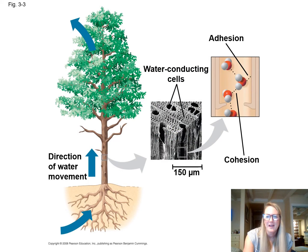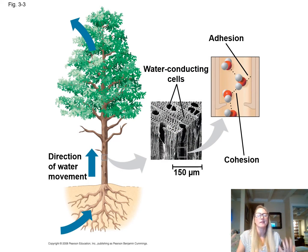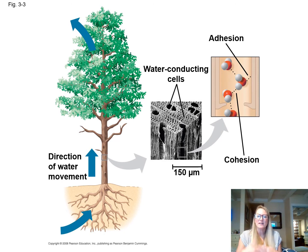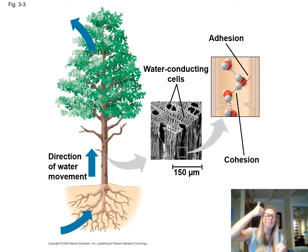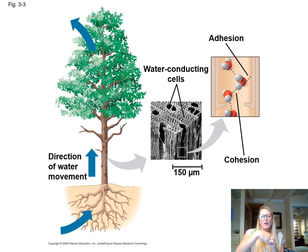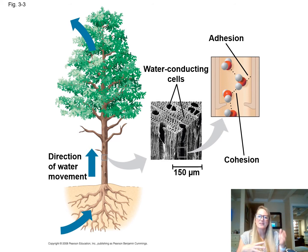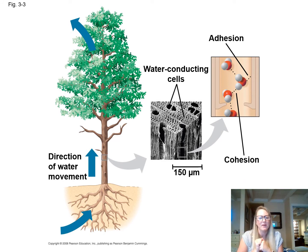Consider these giant trees — sequoias, 100 feet in length. How does water get all the way to the top? Cohesion in the xylem, which is the transporting vessel of plants, allows water to stick with water. If water is being pulled up through transpiration and the opening of stomata, the water molecules hold together and move up. Adhesion is when water molecules stick onto the xylem wall, which also helps them get pulled up to the top of the tree.